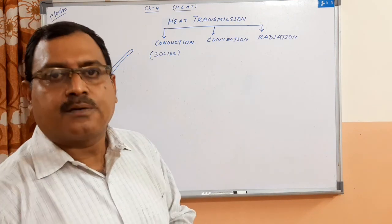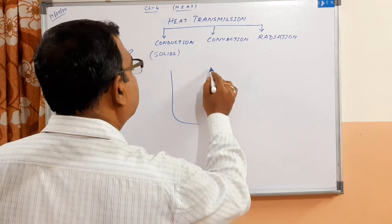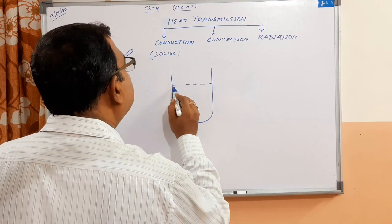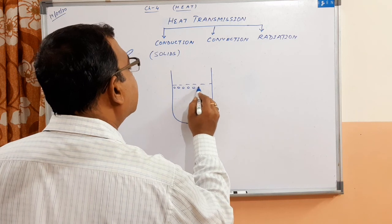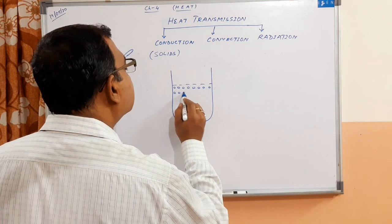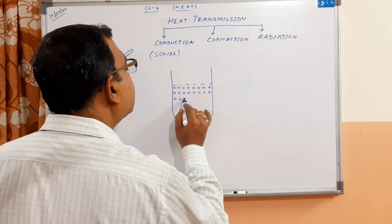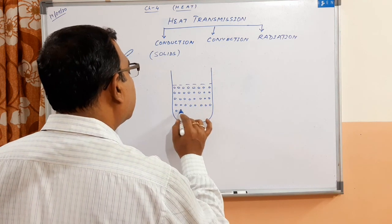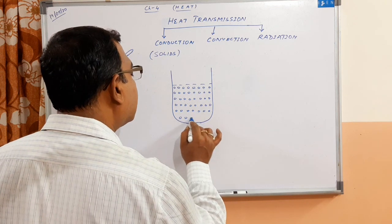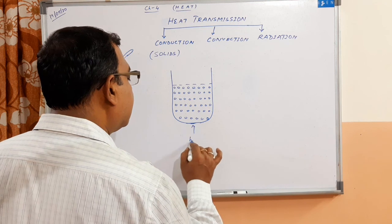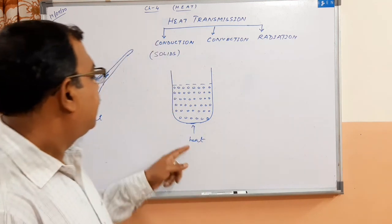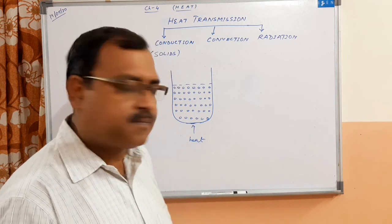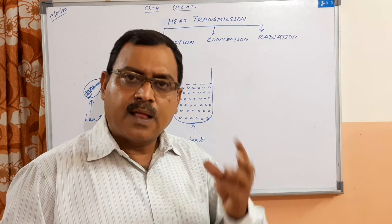Next we come to convection. Supposing you take a beaker of water — water contains molecules but there is a gap between the molecules. Now when you heat from the bottom, the molecules which are at the bottom will get heated first. As they get heated, their volume will increase and they will become lighter.